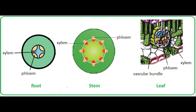In a dicotyledonous plant, we need to know the layout of xylem and phloem in roots, stems and leaves. In the root, the epidermis is on the outside, then the cortex, then the endodermis. Xylem is in the centre and phloem surrounds it. In the stem, there is an epidermis on the outside, a cortex, and the medulla in the bright centre. Xylem and phloem are arranged in an oval shape — xylem on the inside and phloem on the outside.